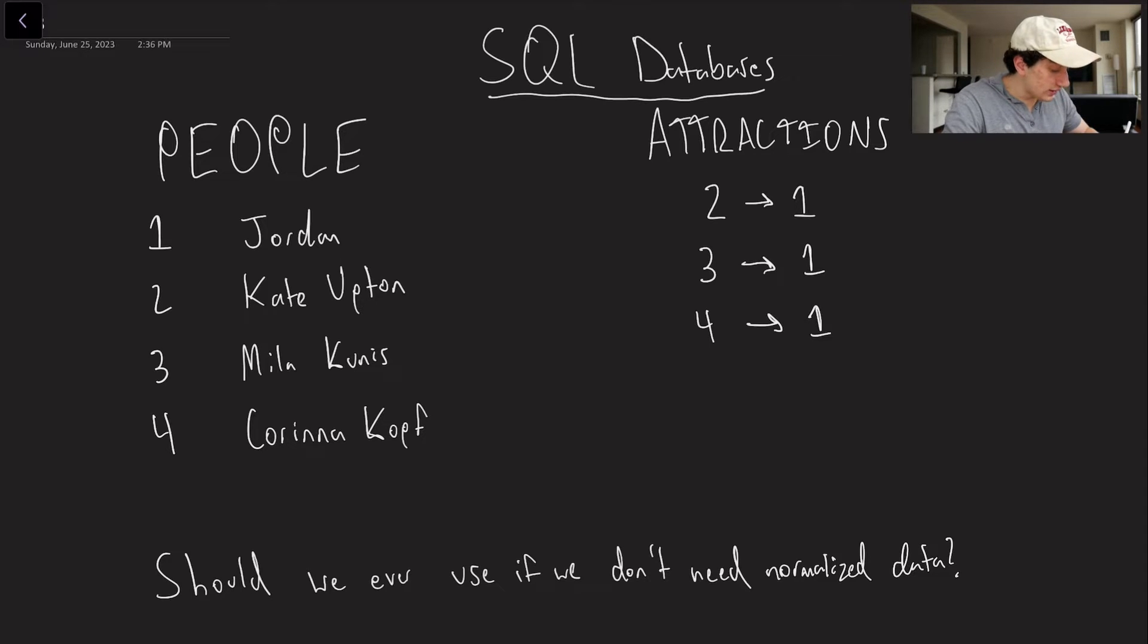So SQL databases, we went over these in the last video, and we know that they're good for relational data, normalized data, where you basically want to have one reference to your piece of data, and have it stay consistent throughout all of your data. You don't want to denormalize your data where you'd have to potentially have multiple copies of a given write.